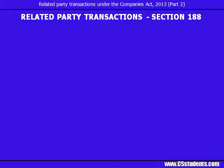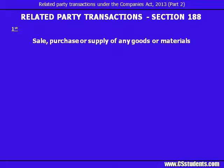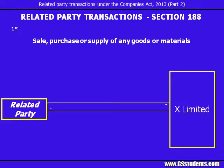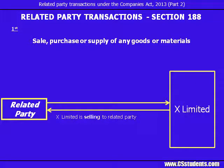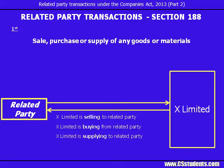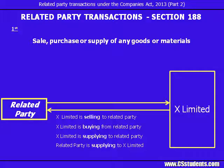Now let's analyze the related party transactions covered under Section 188 one by one. The first is sale, purchase or supply of any goods or materials. So if X Limited is proposing a transaction with a related party where X Limited is either selling, buying, or supplying goods or materials to the related party — or the related party is supplying goods or materials to X Limited — for any of these contracts, X Limited would need to go to its Board for approval in the meeting. And if X Limited or that transaction is covered under the prescribed class, it also has to take approval through special resolution.